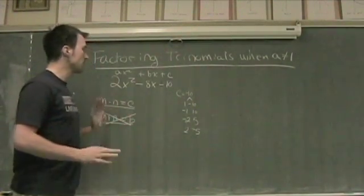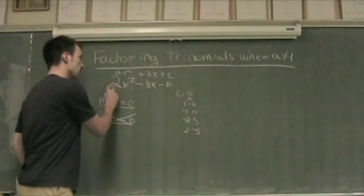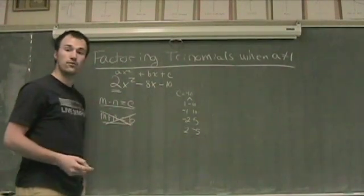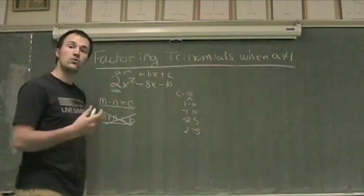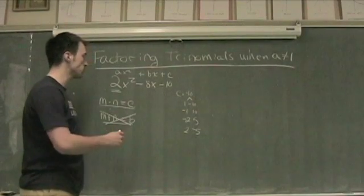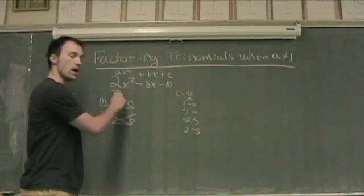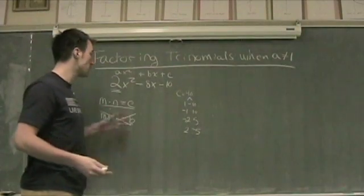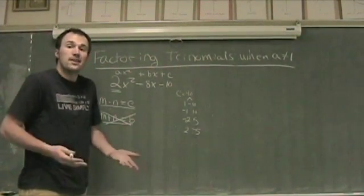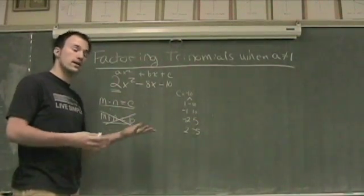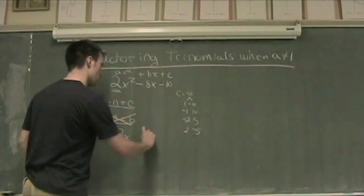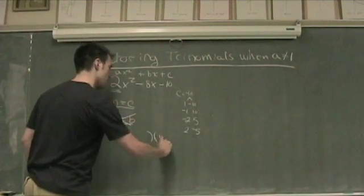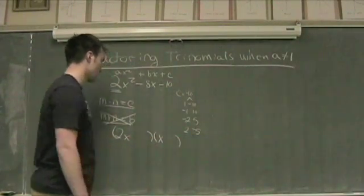The other thing that makes this different is this big 2 in front of our X squared. So what we need to identify is what two terms are going to multiply to give me 2X squared? It used to be, when we had just X squared, it was X times X. But this time, it's going to be 2X and X. So we're going to have a 2X quantity and an X quantity.